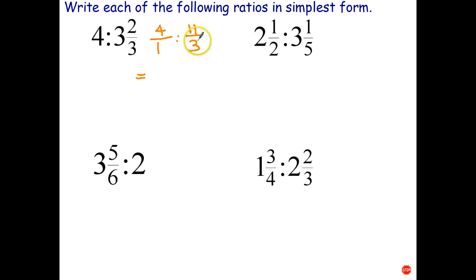The next step is to then get a common denominator. So in this case the common denominator will be 3. So the 11 over 3 just stays the same. And here 1 times 3 is 3, 4 times 3 is 12. So I just rewrote that with a new denominator of 3. And finally, because the denominators are the same, we can rewrite that as just 12 is to 11. And that's in simplest form.